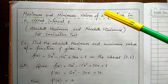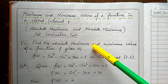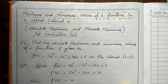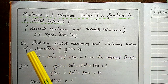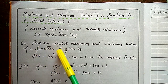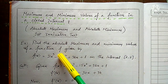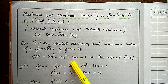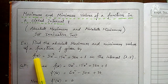The topic is maximum and minimum values of a function in a closed interval. One function is given with a closed interval — we need to find the absolute maximum and absolute minimum. The question is: find the absolute maximum and minimum values of f(x) = 2x³ - 15x² + 36x + 1 on the closed interval [1, 5].